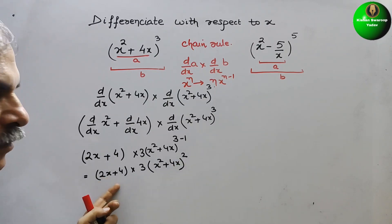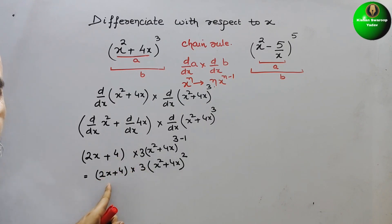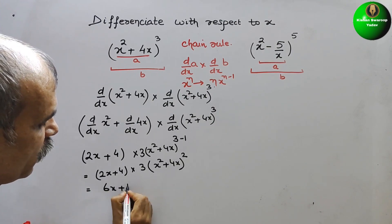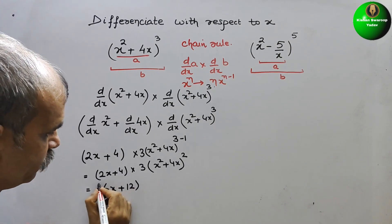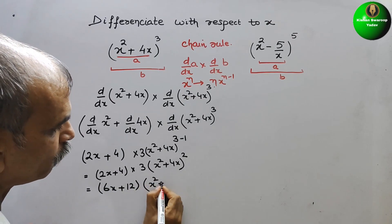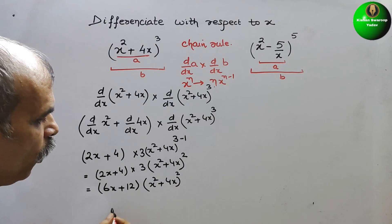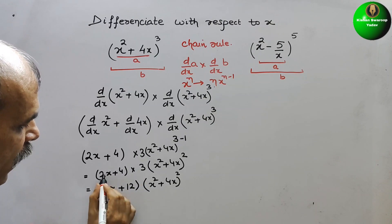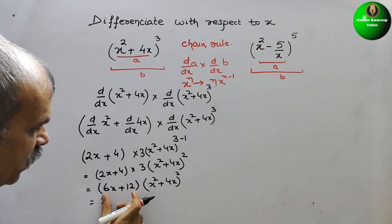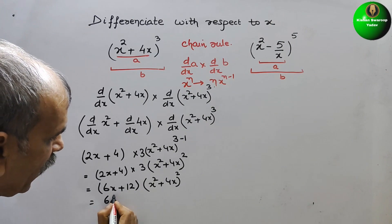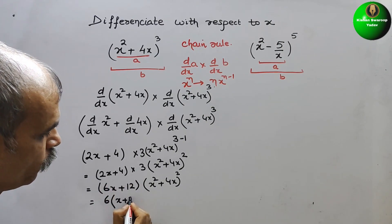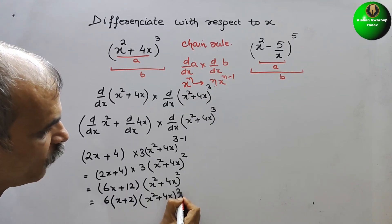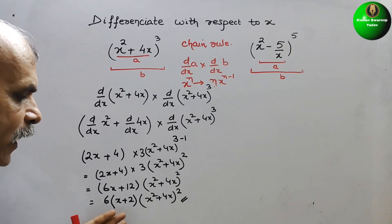This 3 is multiplied with both terms in the bracket, giving us 6x + 12, which is one bracket, times (x² + 4x)². We can factor further: 3 comes outside, and 2 is also common, so 6 comes out, giving 6(x + 2)(x² + 4x)².